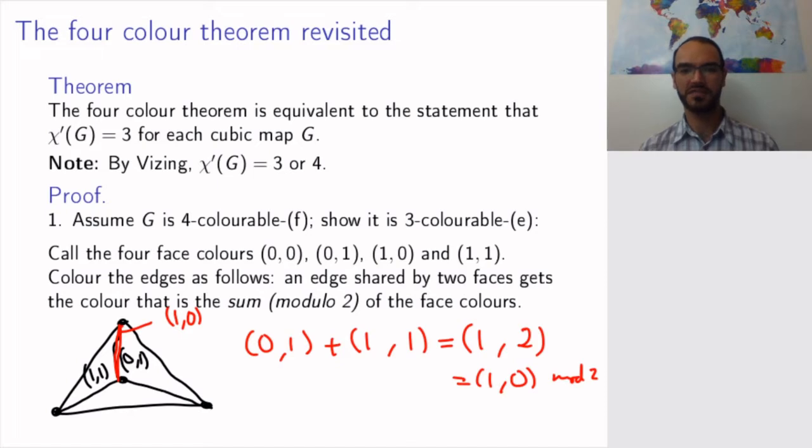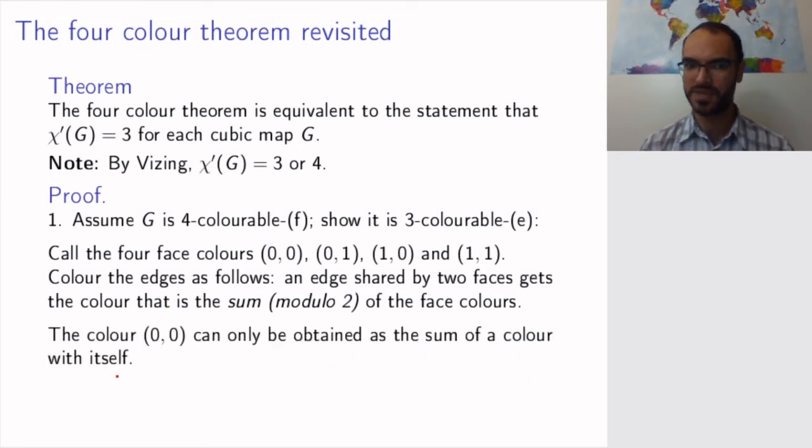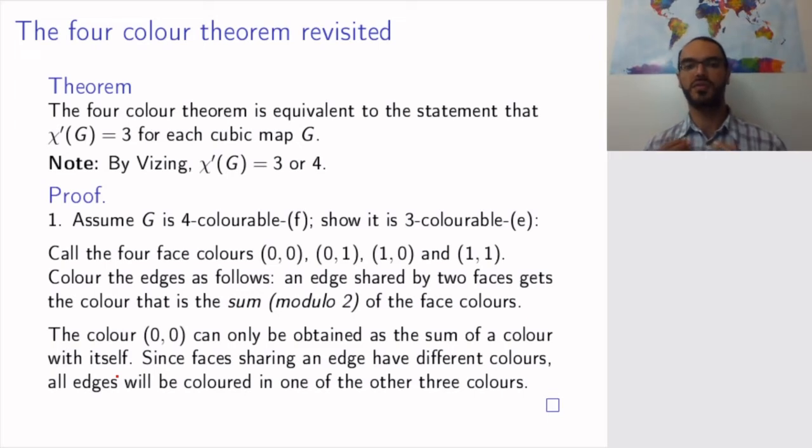So, is this really helpful? I mean, if I'm coloring the edges in the same colors, then I will show that the edges are 4 colorable, right? Because I'm going to get all these 4. Well, no. So, you can check by writing the addition table for these 4 colors that, in fact, you can only get (0,0) as a sum of a color with itself. So, (0,0) could only be the color of an edge if both faces on each side had the same color, which they're not allowed, because by definition of face colorability, that's not allowed.